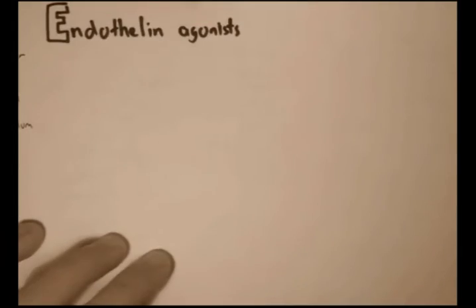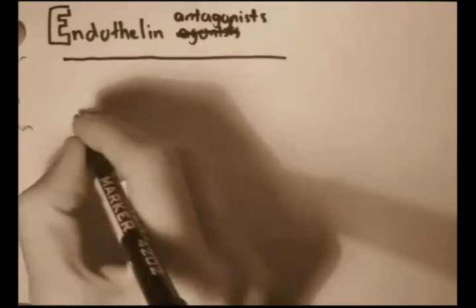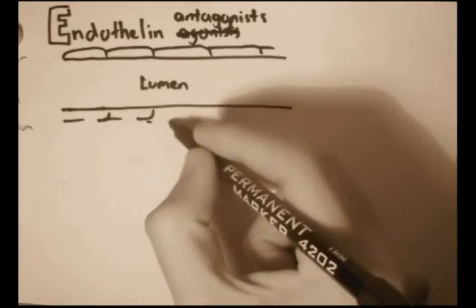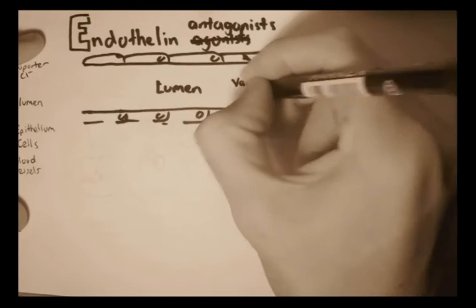Finally, lastly, we have E for endothelium antagonists. And so we'll just look at how it works normally. So here we have the lumen of a blood vessel surrounded by epithelium cells. Vascular epithelium cells.